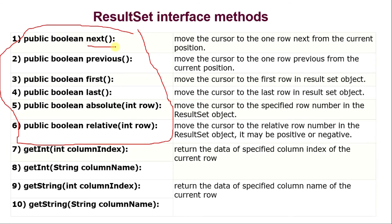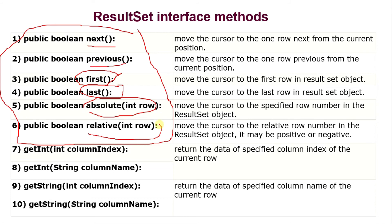The next method moves the cursor to the next row. The previous method moves the cursor to the previous row. The first method moves the cursor to the first row, and the last method moves it to the last row. If you want to move to an exact row number, use the absolute method. If you want to jump a certain number of rows from the current position, use the relative method. So these are the six methods for cursor movement.